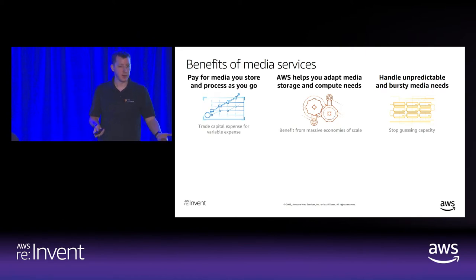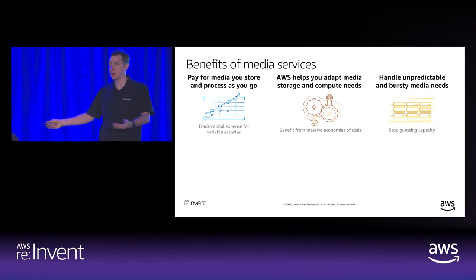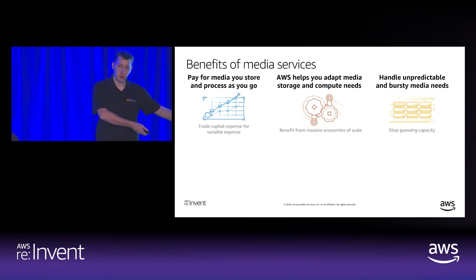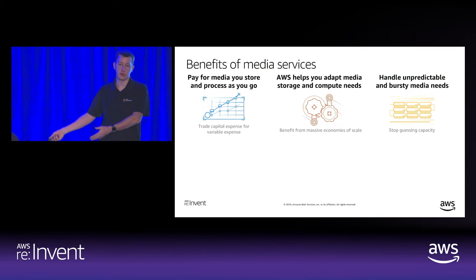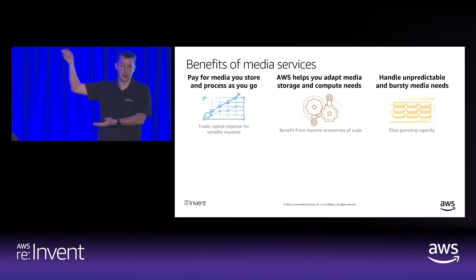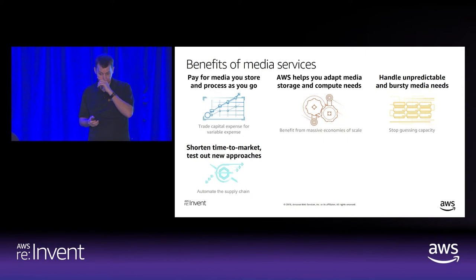This weekend you may need to do one event, and next weekend you may need to do three. In the old world, you would have to buy three sets of encoding equipment to do them all at the same time. In the new world, you just create three channels. And when you're done, you spin them down.